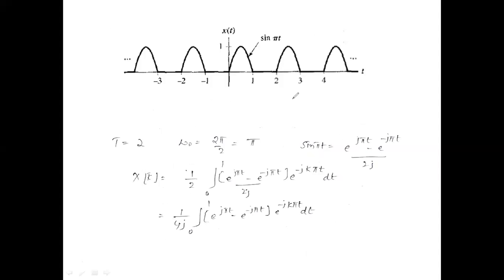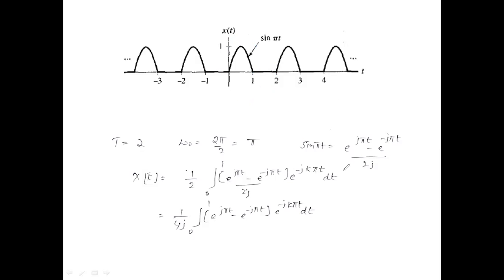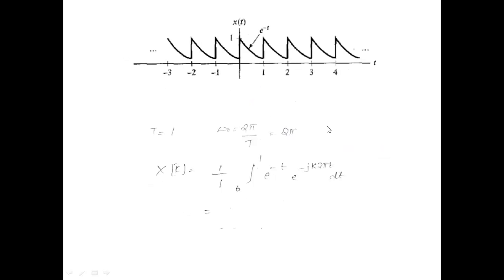This signal also looks like a sinusoid — sine(πt) — but the issue is it has been abruptly cut. When you abruptly cut a sinusoid, lots and lots of frequencies are introduced. For signals that are not standard forms, you need to represent them and then integrate using the formula to get the answer.